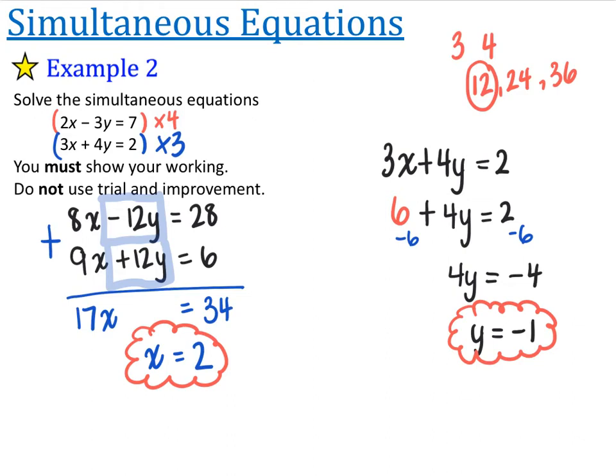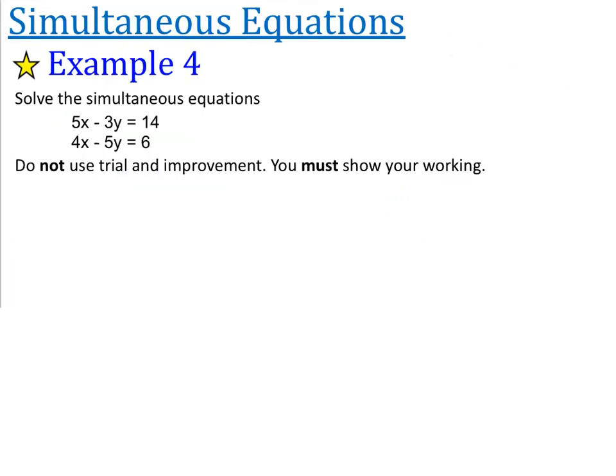Alright, we're going to try one more. We did one example where we had two positives and had to subtract, then we had an example where we had a positive and a negative and had to add. We're going to look at one other example. I'm going to skip example 3 and go over to example 4 now. Last example from me: solve these simultaneous equations — 5x minus 3y is equal to 14, and 4x minus 5y is equal to 6.